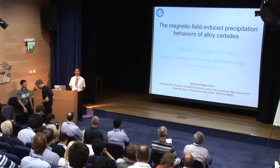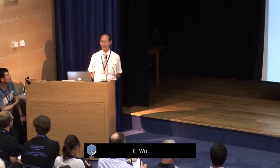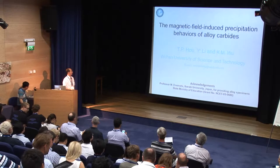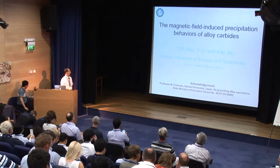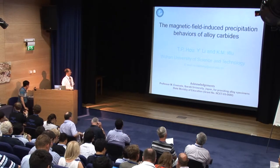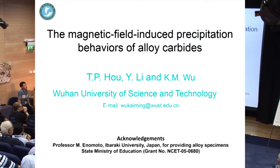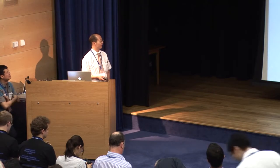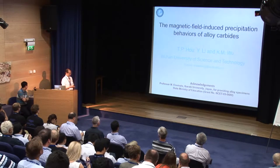Thank you, Mr. Chairman. First of all, I'd like to express my sincere thanks to Professor Hanibadisha for inviting me to attend this great event. My talk is on the magnetic field-induced precipitation behaviors of austenoid carbides. The first two authors, Huo Nimpin and Liu, are my PhD graduate students. I'm from Wuhan University of Science and Technology. Wuhan is a steel research center in China. This work was financially supported by the State Ministry of Education of China. Professor Masato and Motto at Ibaraki University provided us austenoid specimens for this work.